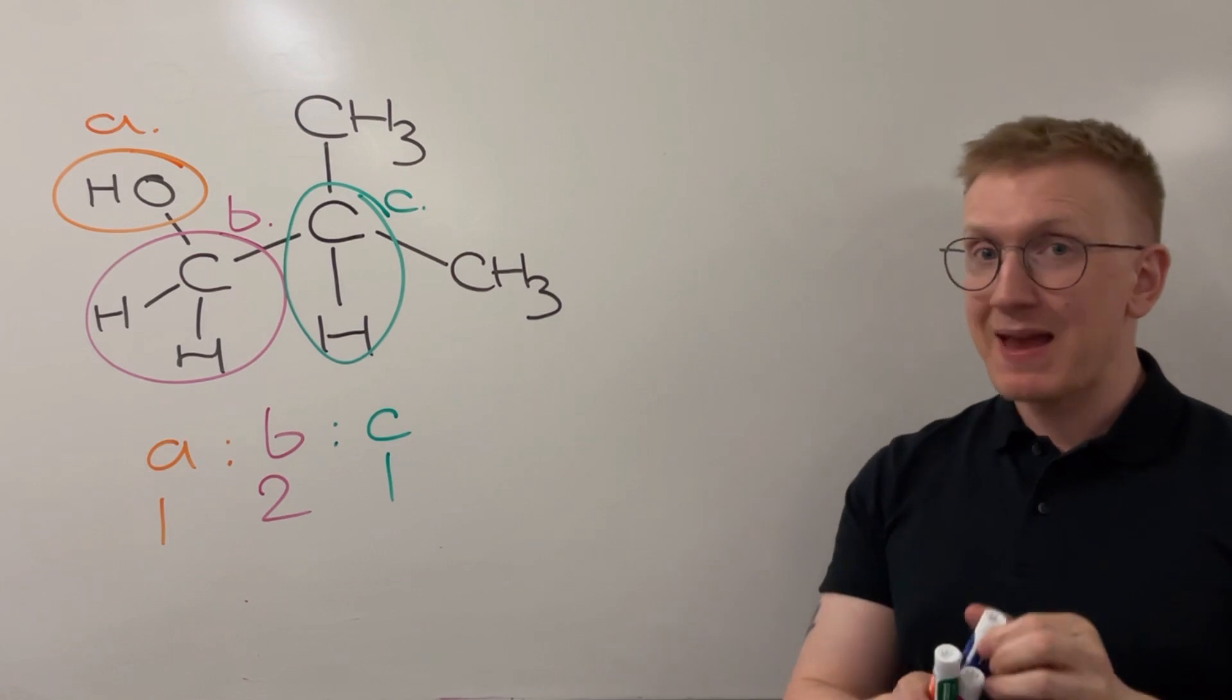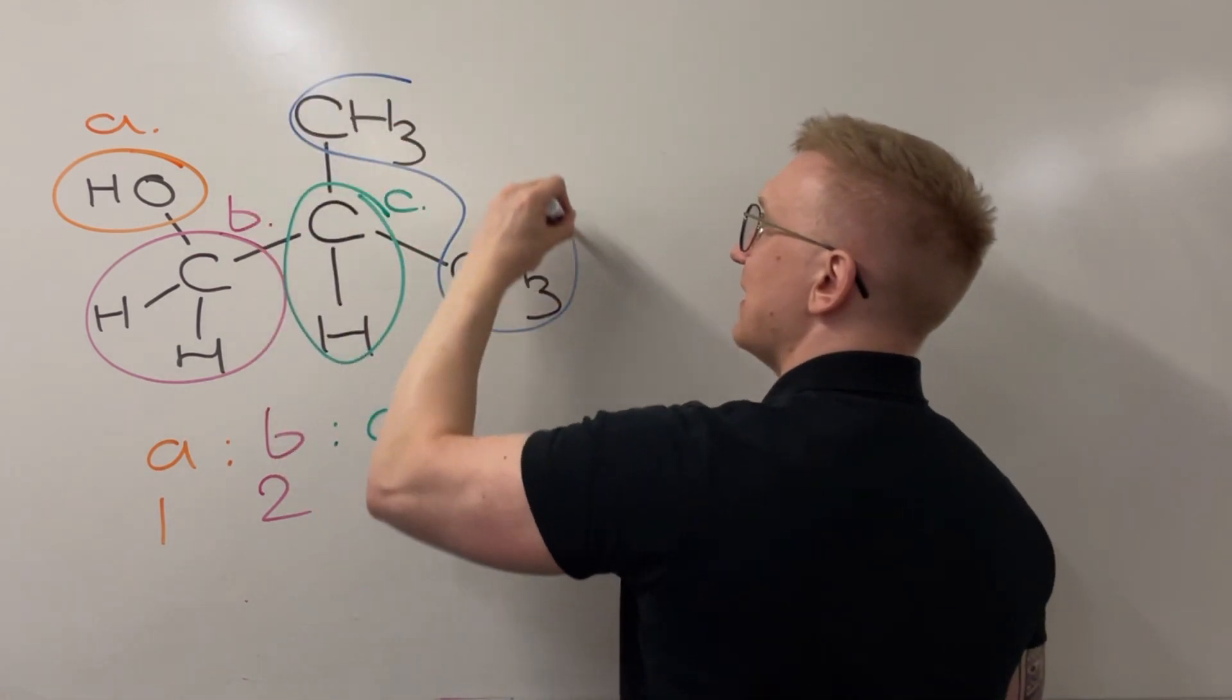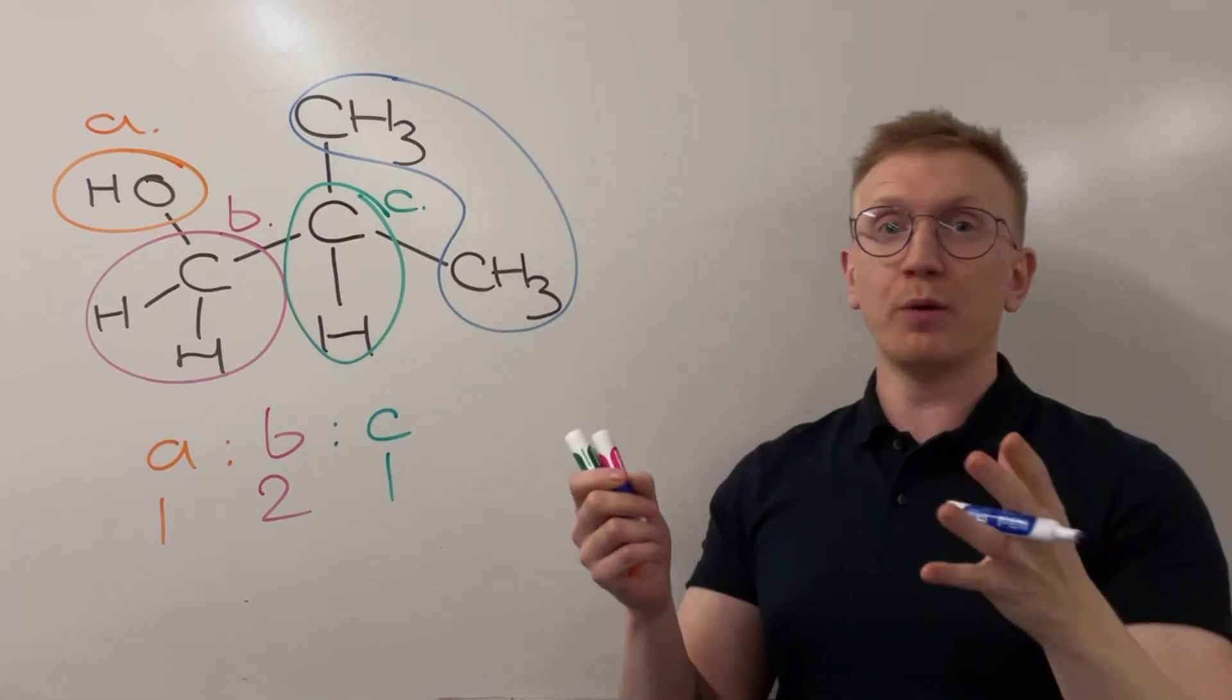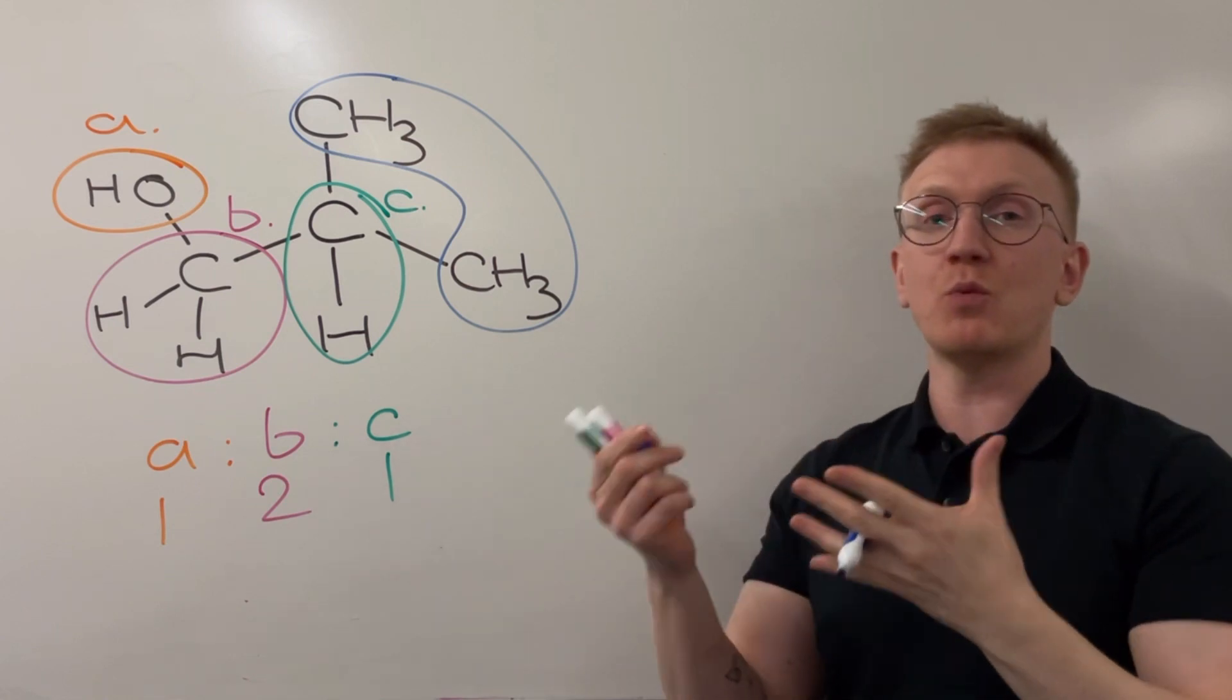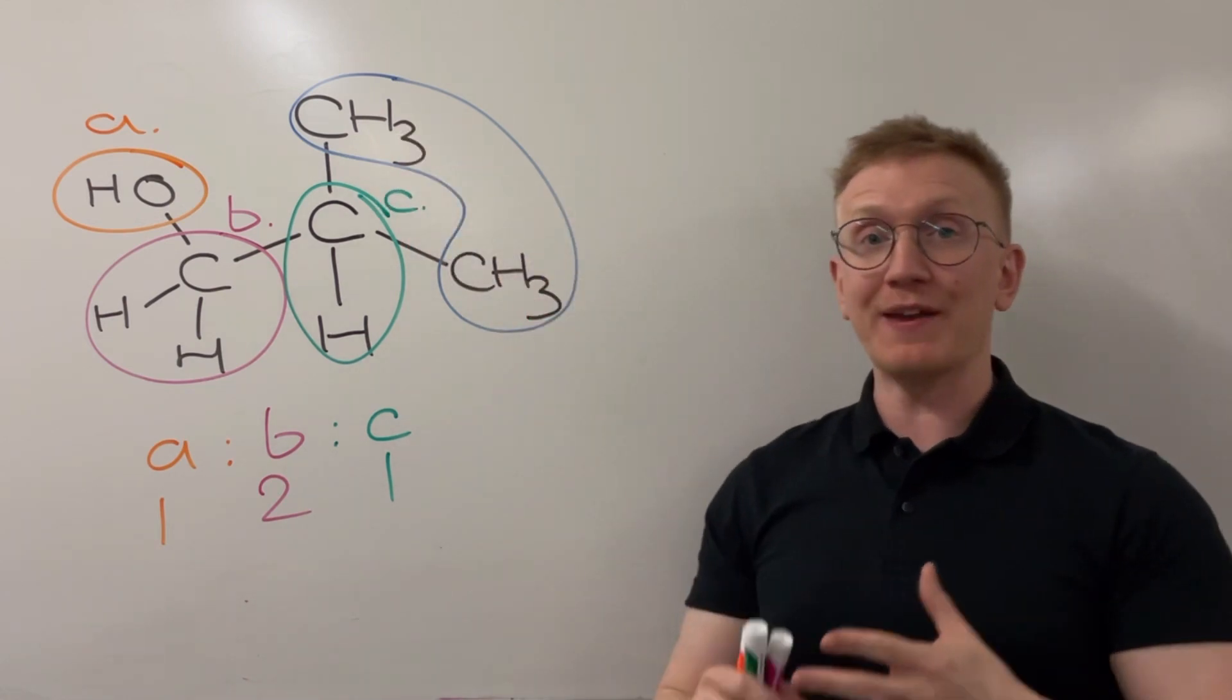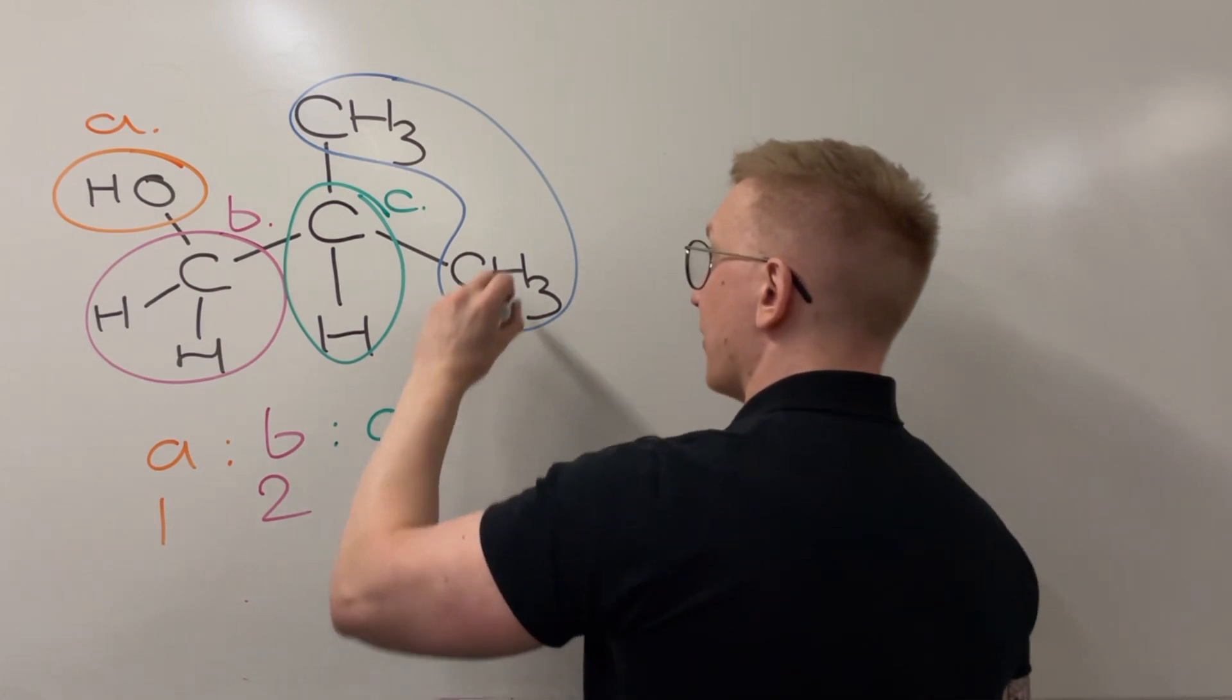Finally then, it may not have been obvious at the very start, but for this environment here I've got these two CH3 groups. Now I don't really need to loop up both of them here, it's just to show you where these environments are going to be, but these two CH3s are equivalent so they are one environment.